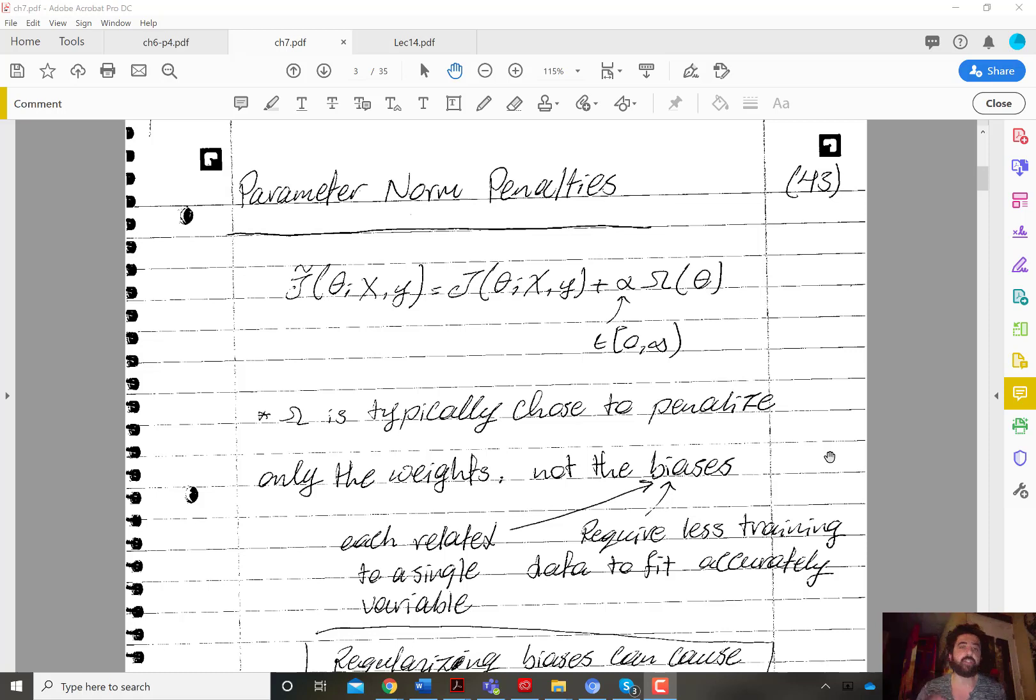As the name suggests, we have a norm that is a function of the parameters and then we add a penalty as a function of that norm. So basically the modified cost function J tilde of theta,